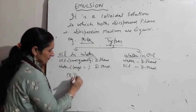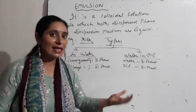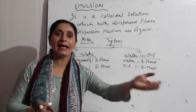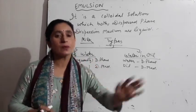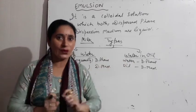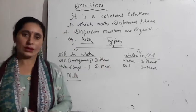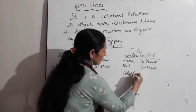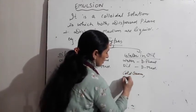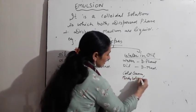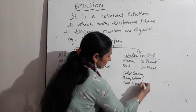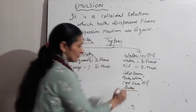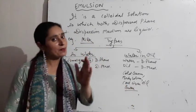Oil-in-water ka best example hai milk. Milk ke andar maximum water hota hai aur proteins, fats, sugars usme dispersed hoti hain — zyada quantity water ki hai. Water-in-oil ke examples hain: cold cream, body lotions, cod liver oil, aur ek bahut achha example — butter — ye sab water-in-oil type colloidal solutions hain.